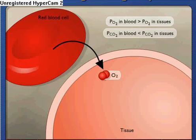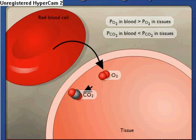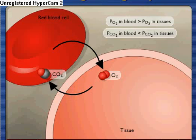Also, the PCO2 in the blood is lower than the PCO2 in the body tissues, so carbon dioxide diffuses into red blood cells there.